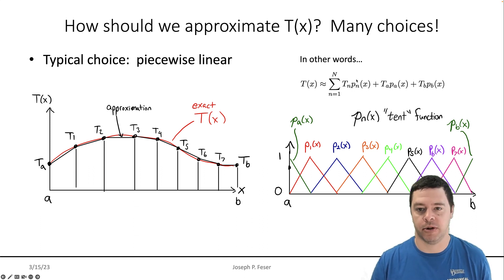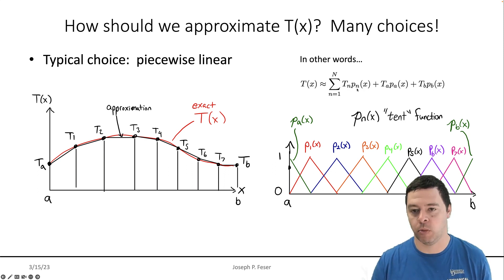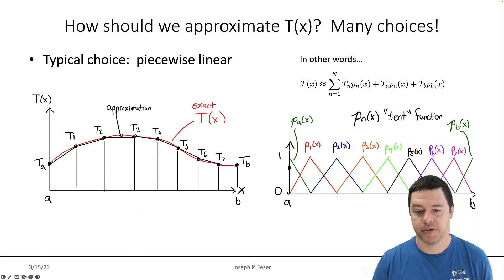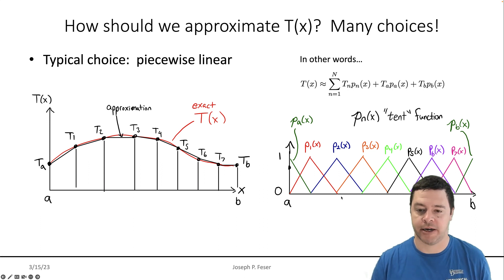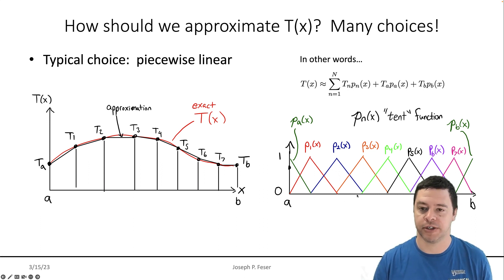For example, the basis function — let me call this P1 of X — would be like a little tent function. It basically goes from 0 up to 1 at the location where we're evaluating the temperature, and then back down to 0 so that there's no overlap with any of the other functions.